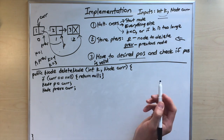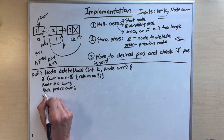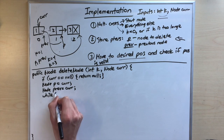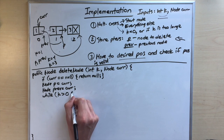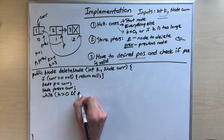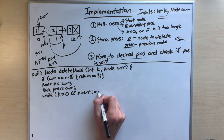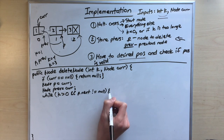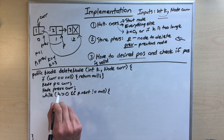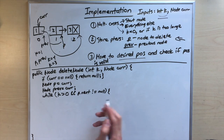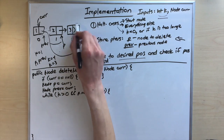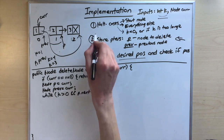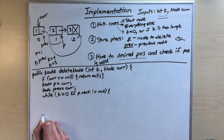We then move to our desired position with a while loop: while k is greater than zero AND p.next does not equal null. This ensures we stop at the last node at most and don't go past null.